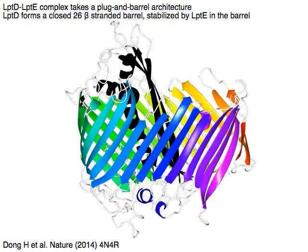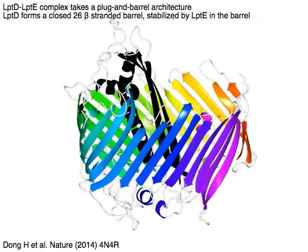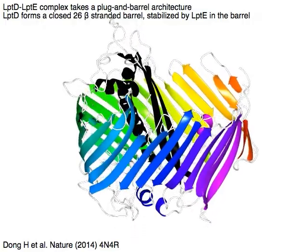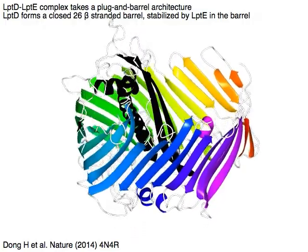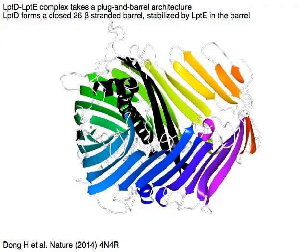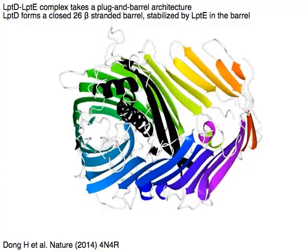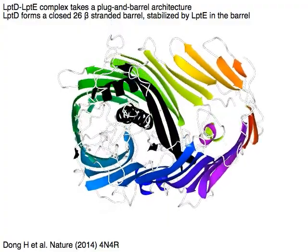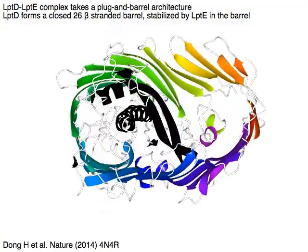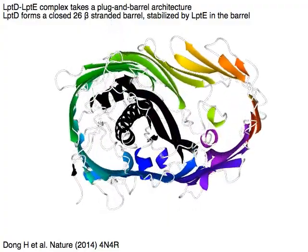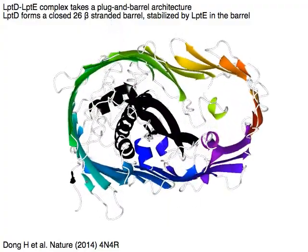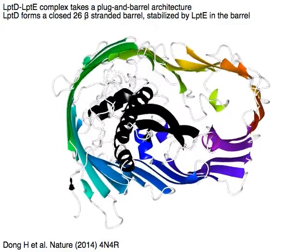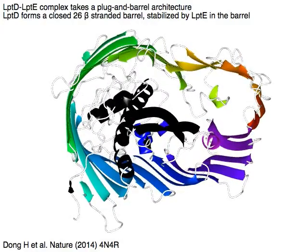The rainbow-colored LPTD and black LPT complex takes a plug-and-barrel architecture. LPTD forms a closed 26-beta-stranded barrel, stabilized by LPT in the barrel.